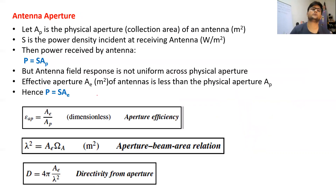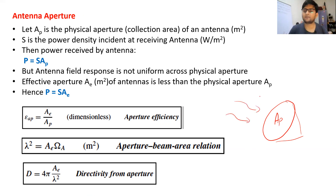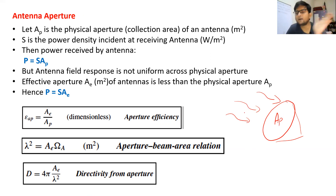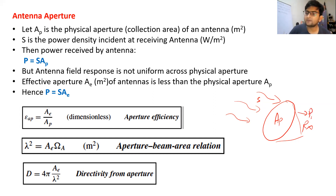Now let us quickly go to antenna aperture. Suppose you have an antenna whose surface area facing the incoming radio wave is given as Ap. Some radio waves are coming in, and we have defined the power incoming at any antenna in terms of power density — let us call this S. So suppose power density S is coming at a receiving antenna whose physical collecting area is Ap. What will be the total power received by this antenna?